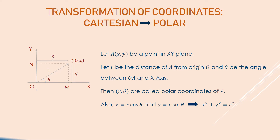We can easily observe that triangle OAM is a right-angle triangle. Thus AM, which represents y, that is the y-coordinate of point A, can be obtained as r·sin(theta). Similarly, the length OM is the same as the x-coordinate of A, which can be represented by r·cos(theta). Thus the polar coordinates give us x = r·cos(theta) and y = r·sin(theta).